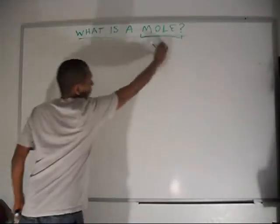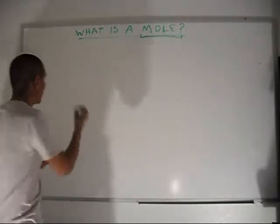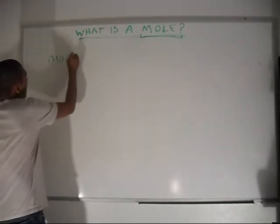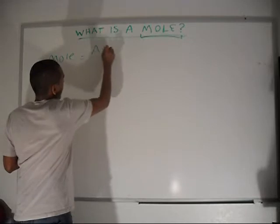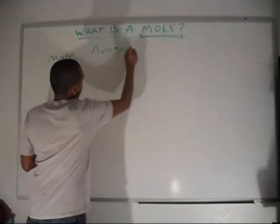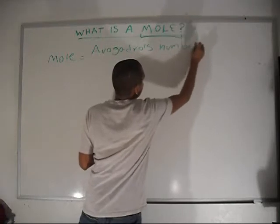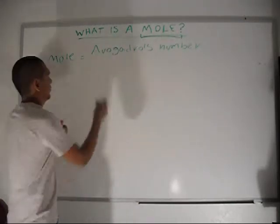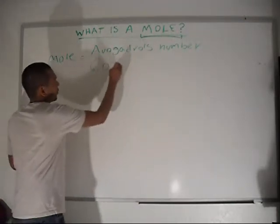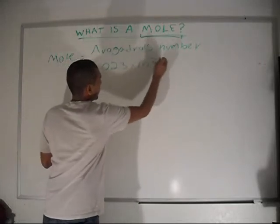So, what is a mole? A mole is equal to Avogadro's number, which is equal to 6.023 times 10 to the 23.